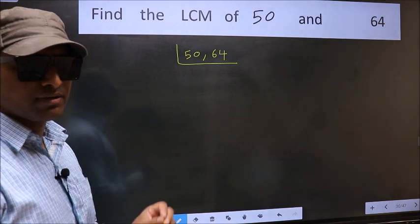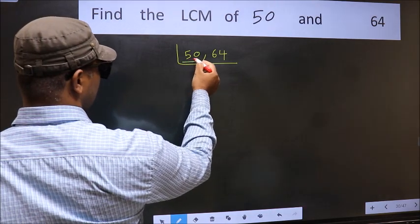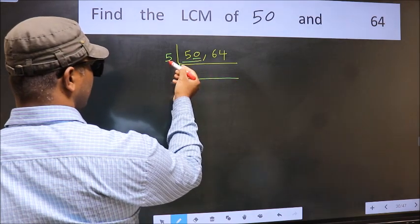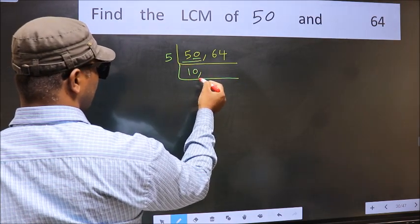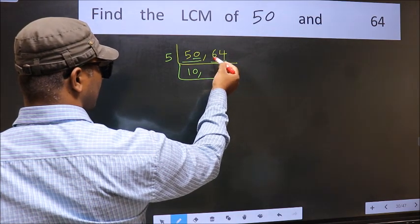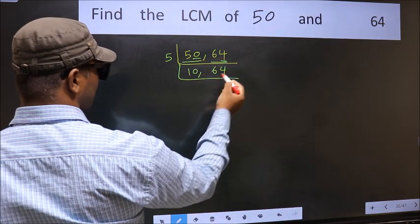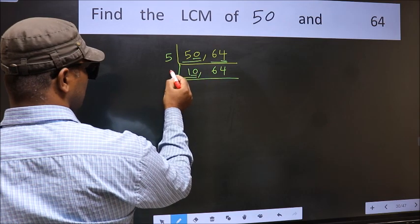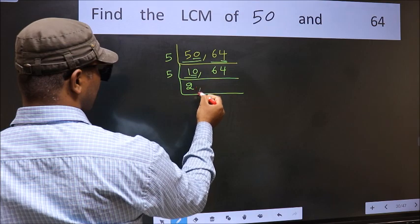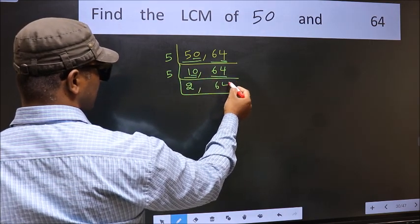Now focus on the first number which is 50. The last digit is 0, so directly take 5. When do we get 50 in the 5 table? 5 tens is 50. The other number 64 — last digit is neither 0 nor 5, so it is not divisible by 5, so we write it down as it is. Now here we have 10; last digit 0, so take 5. When do we get 10 in the 5 table? 5 twos is 10. The other number 64 is not divisible by 5, so we write it down as it is.